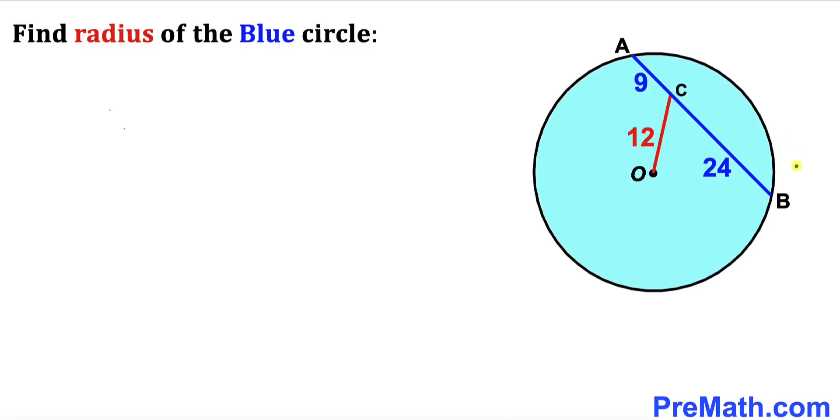Welcome to PreMath. In this video we have chord AB along with line segment OC that intersect at point C, such that line segment AC is 9 units, line segment BC is 24, and line segment OC is 12 units, where O is the center of this circle. Now we are going to calculate the radius of this blue circle.